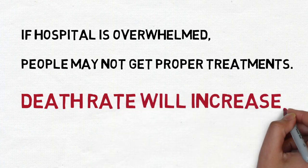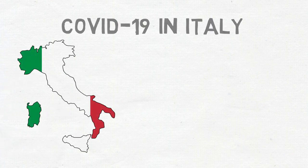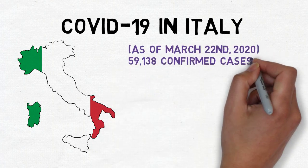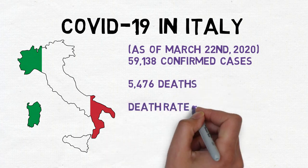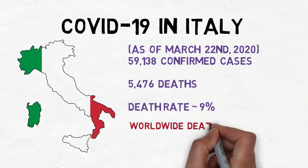Then the death rate will increase significantly because not everyone who should be treated will get the treatment they need. You know how serious things are in Italy right now, right? Italy has 59,138 confirmed cases and 5,476 reported deaths so far,